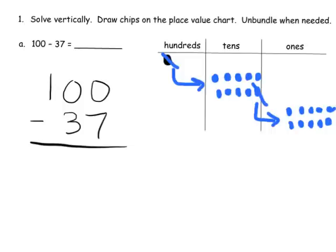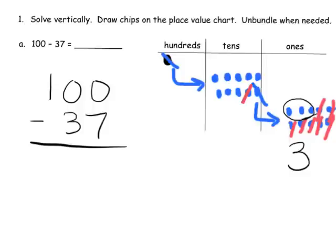Now we can subtract. We take away seven ones — one, two, three, four, five, six, seven — leaving us with three ones. Then it says take away three tens — one, two, three tens — and that leaves us with six tens. So our answer is sixty-three.